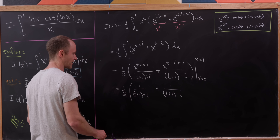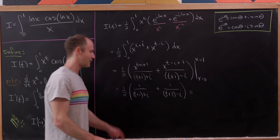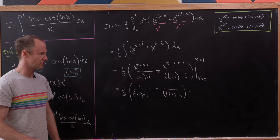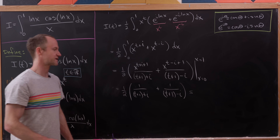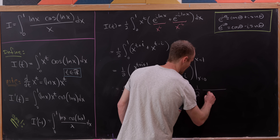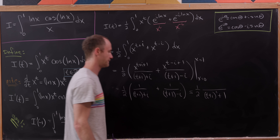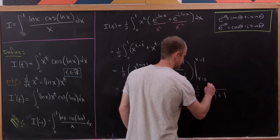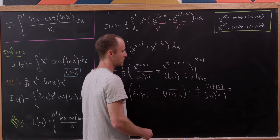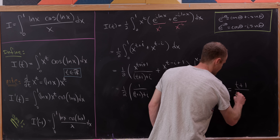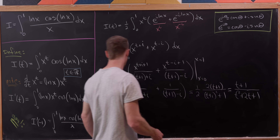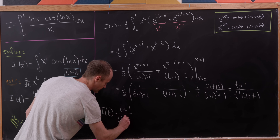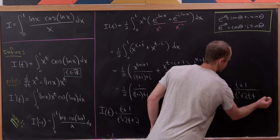Now we give ourselves a common denominator. The product of the two denominators is (t+1)² + 1. The numerators sum to 2(t+1). Canceling things out, we get I(t) = (t+1) / (t² + 2t + 2).